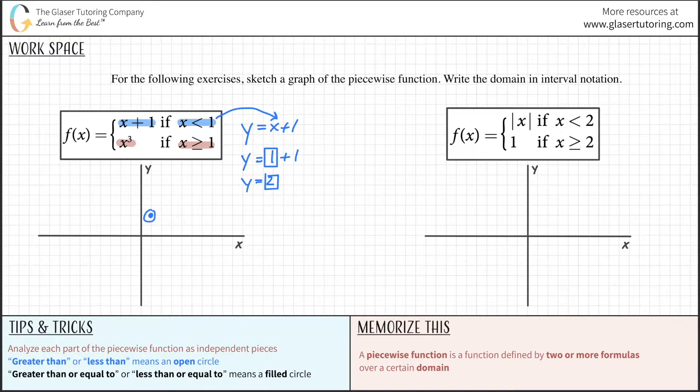This circle will not be closed. It's going to be an open circle. Why? Because this says less than. It doesn't say less than or equal to. I wrote you some notes down here at the bottom about what greater than, less than means open. And whenever you hear greater than or equal to, less than or equal to, it's a filled circle.